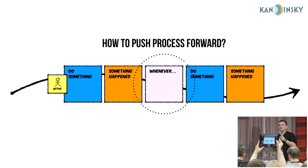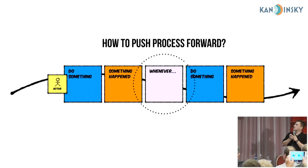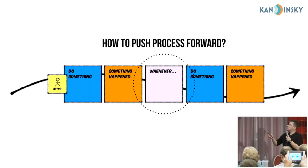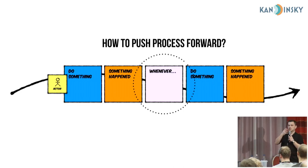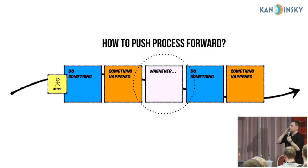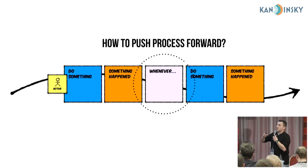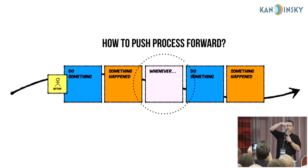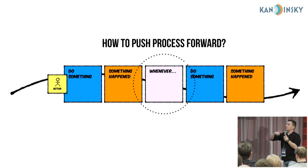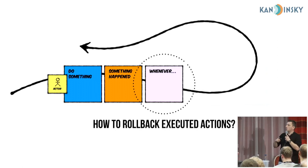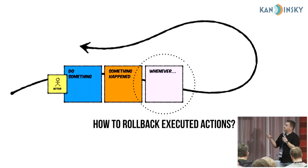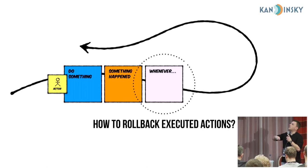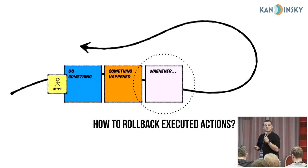The policy is an element responsible for triggering the flow. Alberto said that every time during an event storming session you hear 'whenever something happened' — that is some kind of policy. This policy may be responsible for pushing your process forward, based on some conditions or data from the past, forward to the next step. Something has happened and everything is fine, so we push the process forward. And if we can push the process forward, we can also push it backward — for example, when something went really wrong, we can roll back automatically.